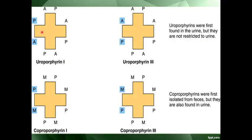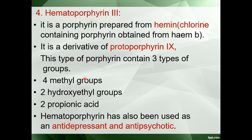The difference between coproporphyrin 1 and 3 is shown here — the position of the groups is simply changed. Both contain acetic acid and propionic acid, but the placement of the groups is different. Next is hematoporphyrin — it is a porphyrin prepared from hemin. Hemin is a chlorine-containing porphyrin obtained from heme B. You just remember that hemin is a chlorine-containing porphyrin.